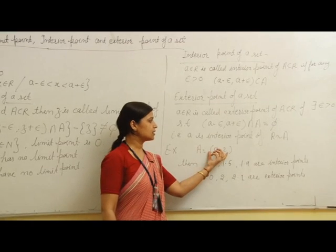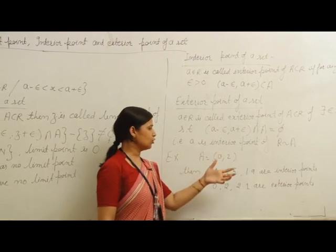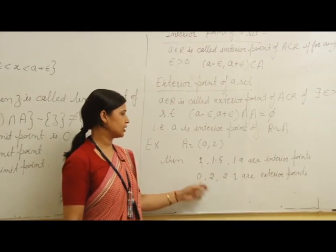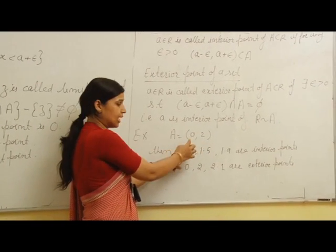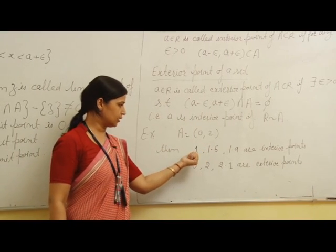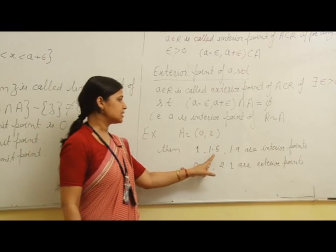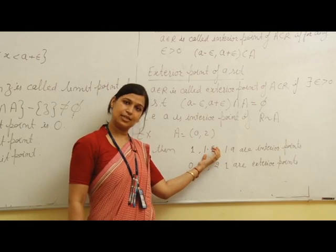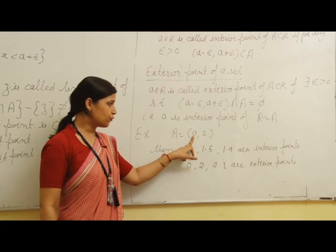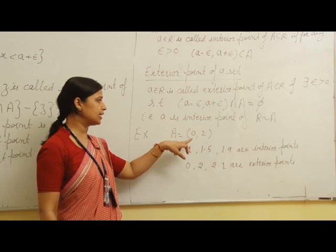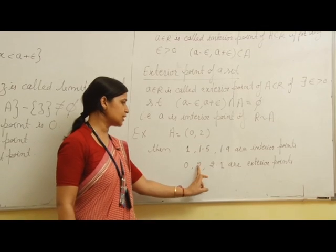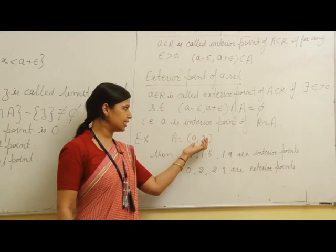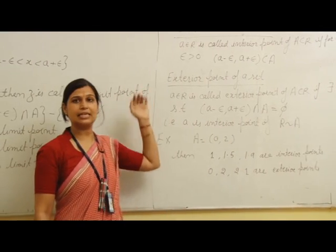For example, let A = (0, 2), an open interval. I want to find which of the points 1, 1.5, 1.9, 0, 2, and 2.1 are interior points and which are exterior points. You can see that 1 lies within the set and there exist infinite open intervals containing 1 which are wholly contained in A, so 1 is an interior point. Similarly, 1.5 and 1.9 are interior points. But for 0, you cannot find any open interval including 0 which is wholly contained in (0, 2), so 0 is not an interior point. Same for 2. And 2.1 is an exterior point because there does not exist any open interval containing 2.1 which is wholly contained in A. With this example, you can understand the definitions of interior point and exterior point.